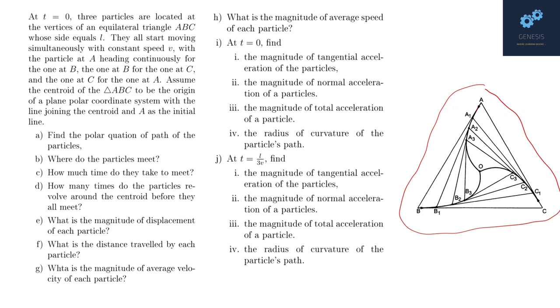So, the particle A travels in a path like this. At every instant its velocity is directed towards B, B's velocity is directed towards C, C's is directed towards A, so on and so forth. This is quite a well known problem.